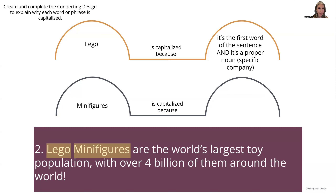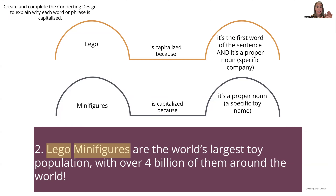We repeat the same activity — put 'Lego' in the first arch: it's the first word of the sentence but also a specific company name. Then the second word, 'minifigures' — why is it capitalized? It's a proper noun and a specific toy name. The word 'specific' is going to come up over and over as you work with students on proper nouns. It is a specific company, a specific toy, a specific country, a specific language, a specific day of the week. That word 'specific' really cues students in: I need to capitalize this because it is a specific fill-in-the-blank.